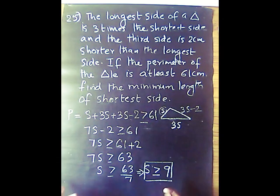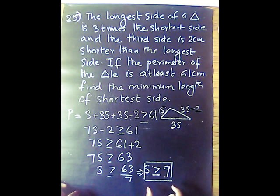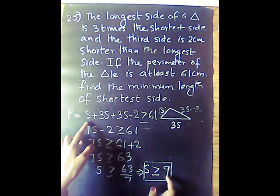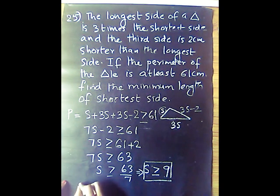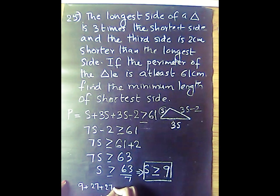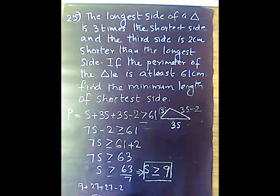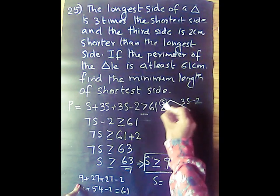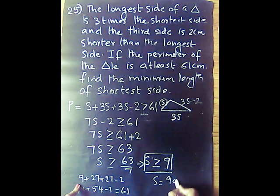The minimum value of s is 9. Substituting: 9 plus 3 times 9 is 27, plus 27 minus 2. So 9 plus 27 plus 27 minus 2 equals 61. The shortest side is at least 9 centimeters.